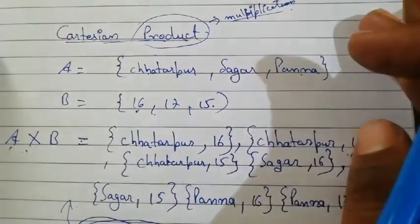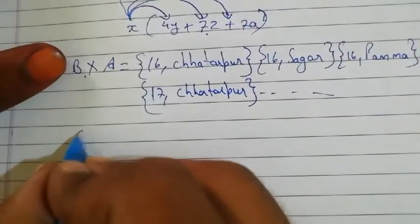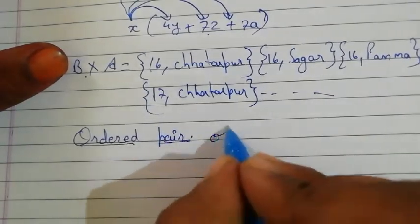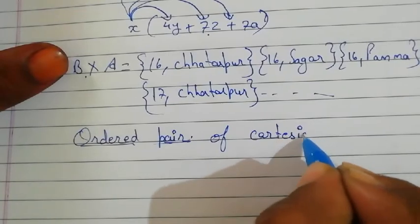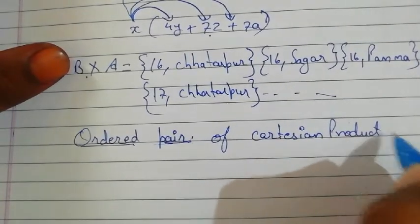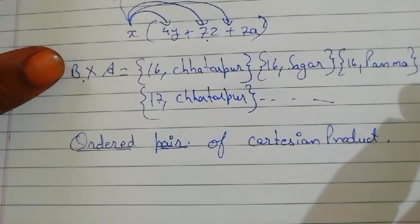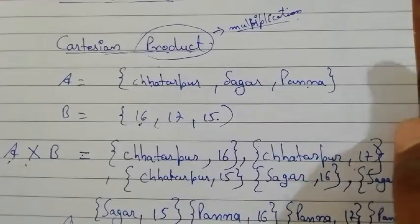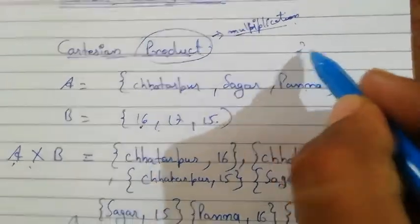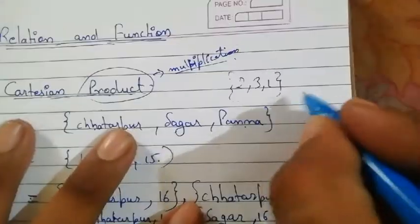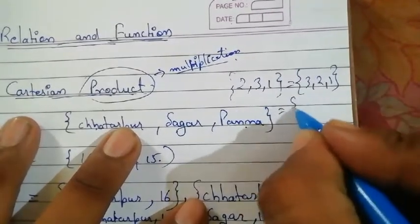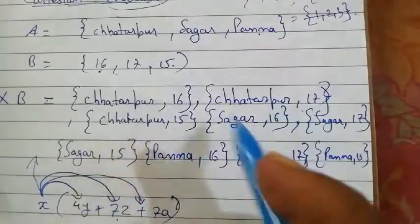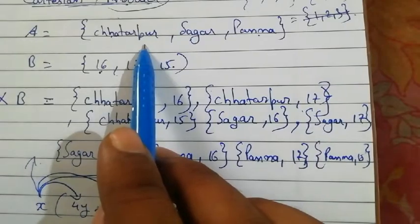Because the order is maintained, it is called an ordered pair in Cartesian product. Earlier we discussed that in sets, order doesn't matter — for example, {2,3,1} equals {1,2,3}. But here in Cartesian product, we must not change the order already given in the sets.